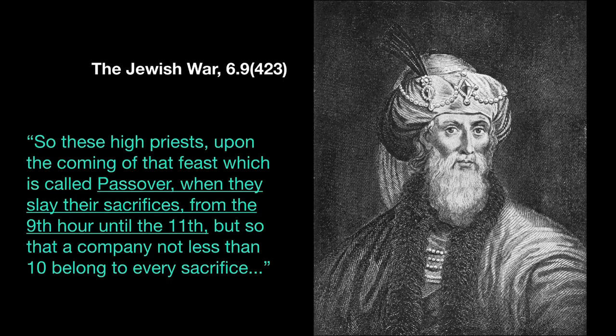In Special Laws 2:27:145 Philo speaks of the Passover and says 'on which the whole people offer sacrifice, beginning at noonday and continuing till evening' — noonday being the first going down of the sun and evening being the second going down. Josephus adds in Jewish Wars book 6, chapter 9, part 423: 'these high priests upon the coming of that feast called Passover, when they slay their sacrifices from the ninth hour until the eleventh, but so that a company not less than ten belong to every sacrifice.' Josephus gives a more narrow time frame, and for us this time of year would probably equal roughly five to seven o'clock — which is between the two evenings.